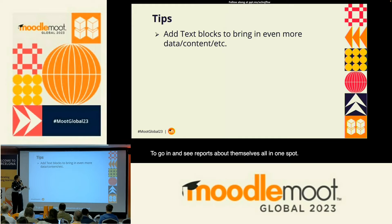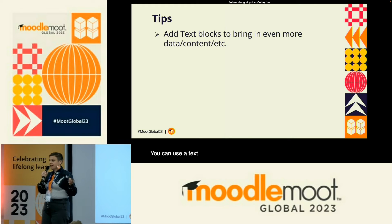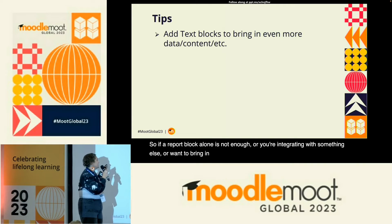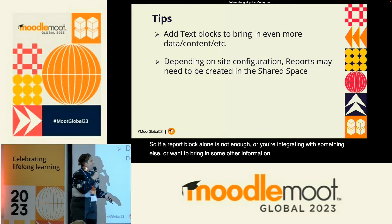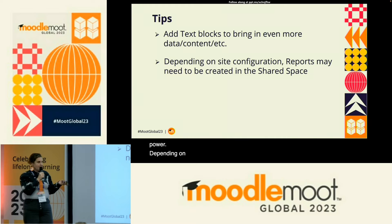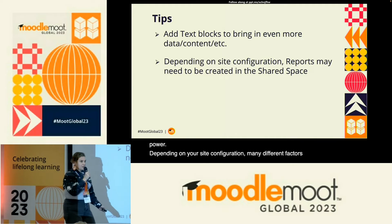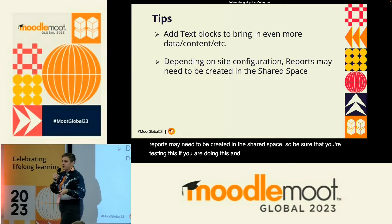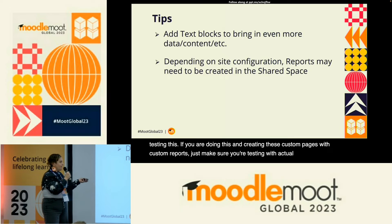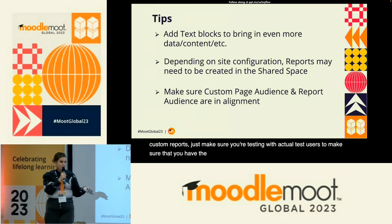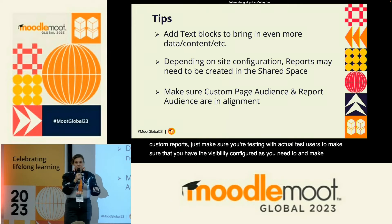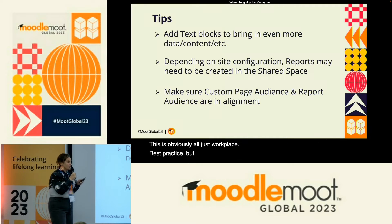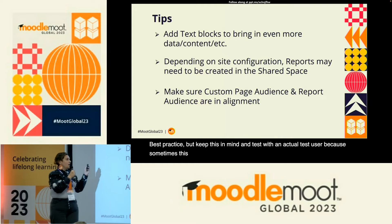Some tips on this one: you can use a text block to bring in anything else that you want — if a report block alone is not enough, or you're integrating with something else, text blocks give you that power. Depending on your site configuration, your reports may need to be created in the shared space. If you are creating these custom pages with custom reports, make sure you're testing with actual test users to ensure visibility is configured as you need. Make sure your custom page audience and your report audiences are in alignment — we have multiple layers of permissions with this one.